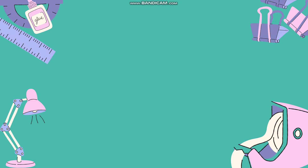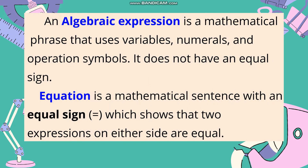Before we proceed with today's lesson, let us review the meaning and difference between expression and equation. An algebraic expression is a mathematical phrase that uses variables, numerals, and operation symbols. It does not have an equal sign. While an equation is a mathematical sentence with an equal sign, which shows that two expressions on either side are equal.